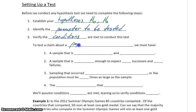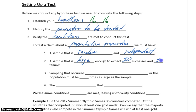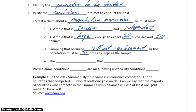In order to test a claim about a population proportion, we're going to need a sample that's random and independent. We'll need a sample that's large enough to expect both 10 successes and 10 failures, and we need sampling that occurs without replacement — or a population that's 10 times as large as our sample. Our last condition is the assumption that the null hypothesis, H0, is true.